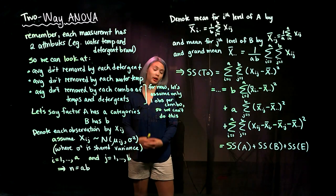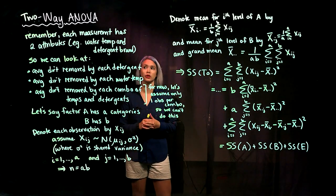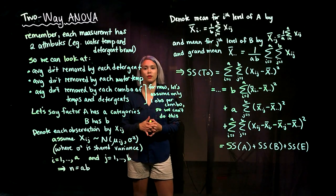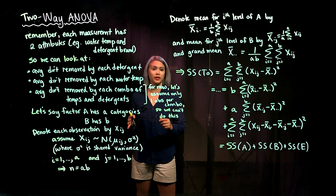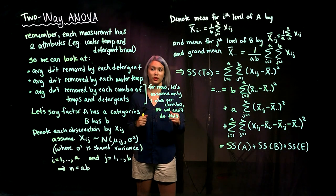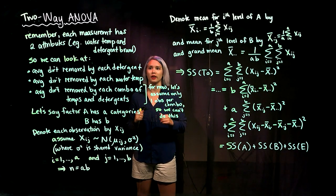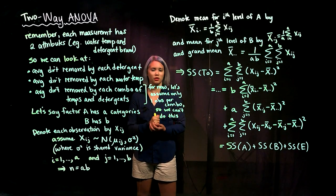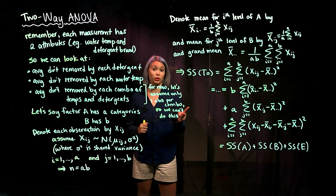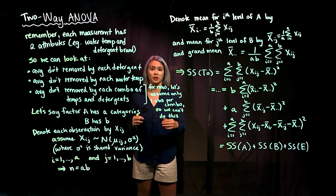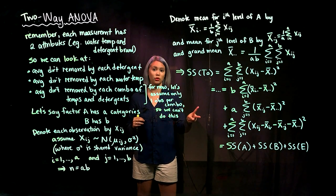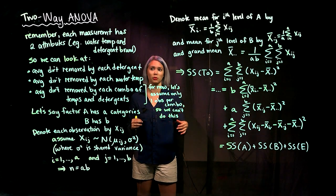In a previous video, we very briefly introduced two-way ANOVA, and now we're going to get into more of the details and more of the notation. Remember that in two-way ANOVA we have two categorical variables, so every measurement has two categorical variables associated with it.